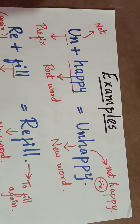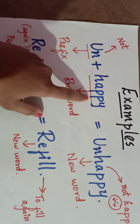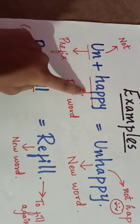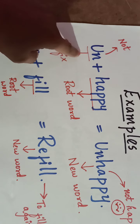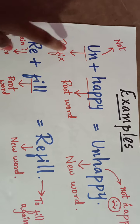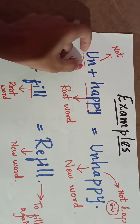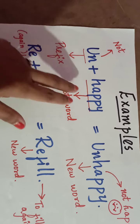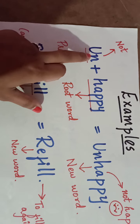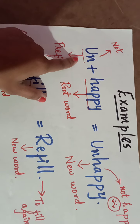Here are some examples. See, 'happy' is a root word. With 'happy' you are going to add one prefix. The prefix is 'un', and 'un' means 'not'. So 'un' is your prefix — a word added before the beginning of a root word.